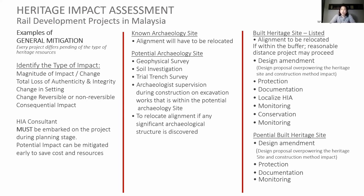We have to do a dilapidation survey and an as-built drawing. For example, in Kuala Lumpur the geology is largely limestone — there may be sinkholes, and one excavation could cause the whole building to sink. Our documentation is therefore very important. We also need to do as-built surveys. For the alignment, when it's going to pass through a significant site, we need to do another localized HIA. We also have monitoring during construction, reporting back to the Department of National Heritage, and there are also opportunities for conservation.